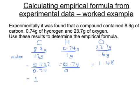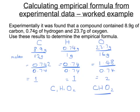We're going to divide that by 0.74, and we're going to get, well, definitely 1. And we're going to divide this one by 0.74, and we're going to get 2. So, we've got 1 carbon to 1 hydrogen to 2 oxygens, or CHO2 for our empirical formula.